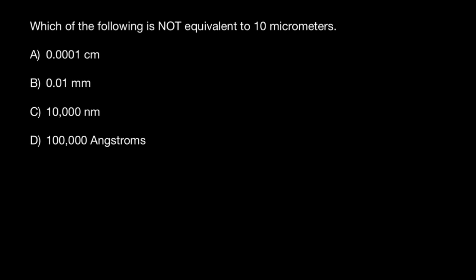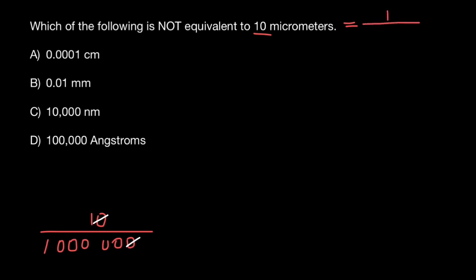What is micro? Micro means one millionth of something — one divided by one million. But we have 10 here: 10 micrometers. So we put a zero in the numerator and cancel one zero from each, giving us 10 micrometers equals one divided by 100,000 of a meter.